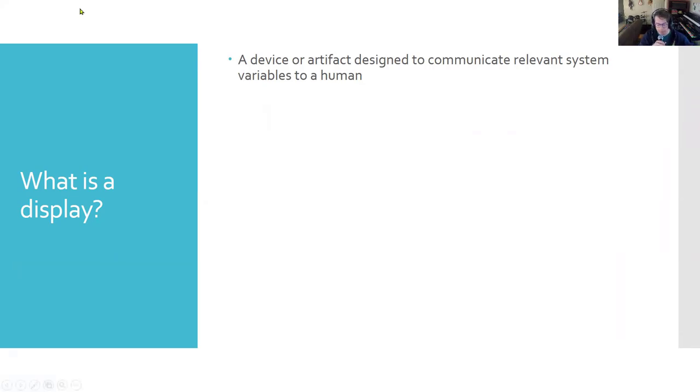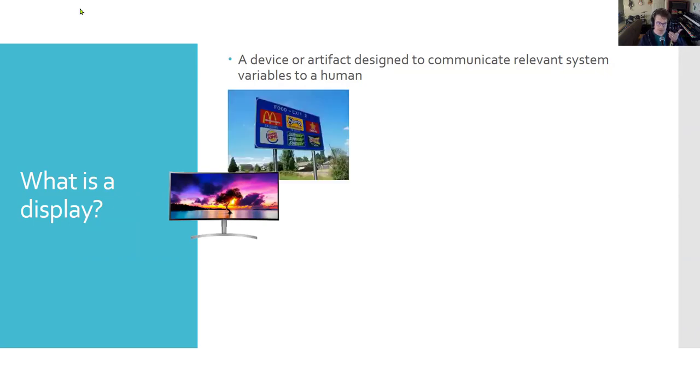So first of all, everybody knows an example of a display. You're looking at one right now. You are hearing one right now. So the key thing is to not only think about things that are visual, but any synthetic item, any non-internal information source designed to communicate system variables to a human.